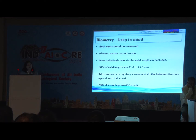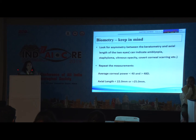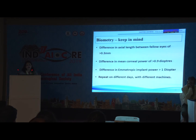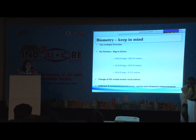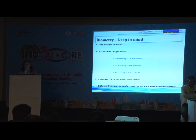In summary: biometry of both eyes should be measured. Always use the correct mode. Most individuals have similar axial lengths and most corneas are regularly curved and similar between the two eyes, so look for any asymmetry. If there is asymmetry, repeat your measurement on different machines, by different persons, at different times, and on different days. Use multiple formulas. Always correct for the position of the IOL — if you are placing it in the sulcus, calculate accordingly. Remember that there are different A-constants for optical versus ultrasonic measurements, so do not use the same constant. Ask your IOL manufacturer to provide A-constants for both ultrasonic and optical measurements.